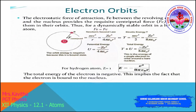Hello children, this is the continuation of atom and electron orbits. The Rutherford nuclear model of the atom involves classical concepts. The atom has an electrically neutral sphere; it consists of a very small and massive positively charged nucleus at the centre, which is surrounded by revolving electrons in their respective dynamically stable orbits.